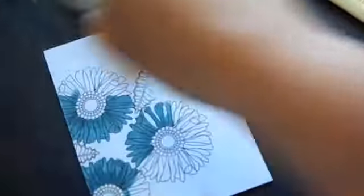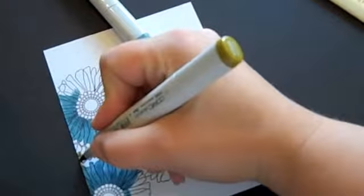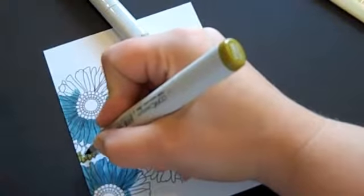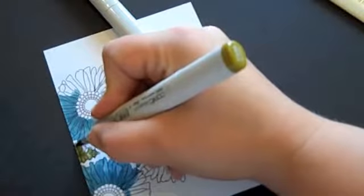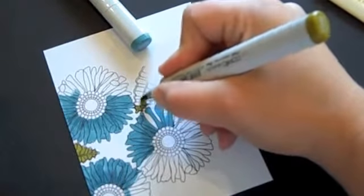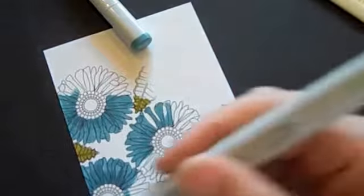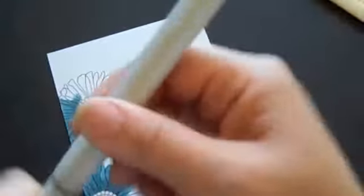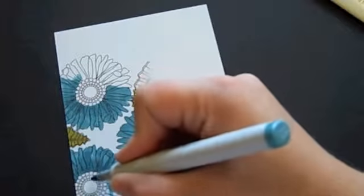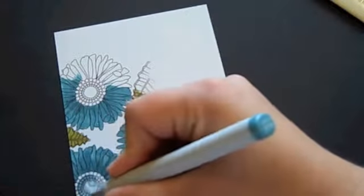For the leaves, I'm going to add a little bit of the green, the YG95, and I'm going to add the BG72 to the middle of the flowers.